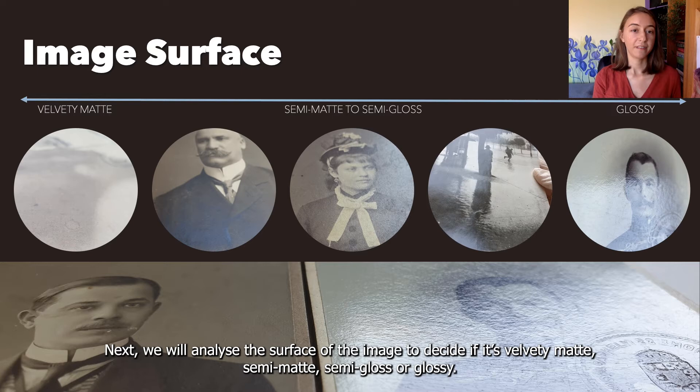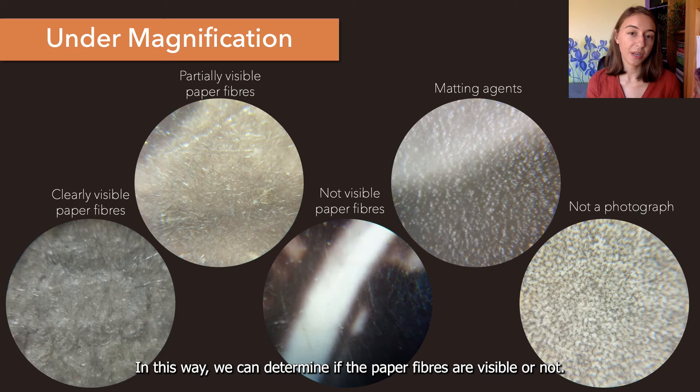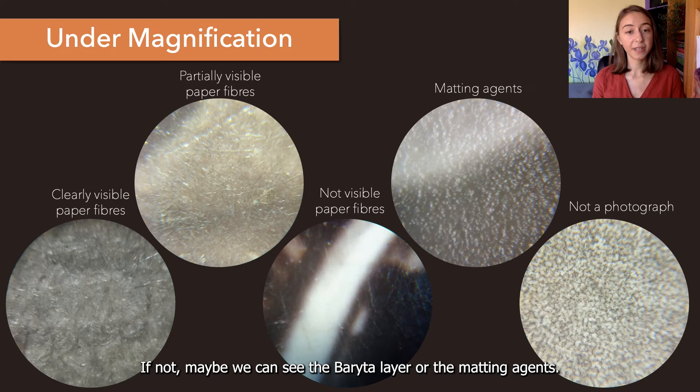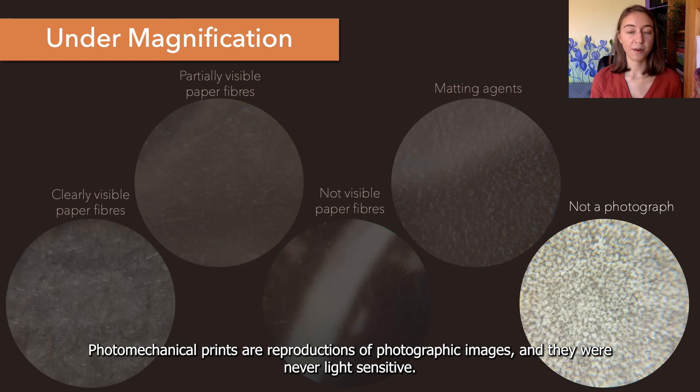Next, we will analyze the surface of the image to decide if it's velvety matte, semi-matte, semi-gloss, or glossy. Then we will look at the photograph through the microscope. In this way we can determine if the paper fibers are visible or not. If not, maybe we can see the baryta layer or the matting agents. Sometimes we can discover an interesting pattern showing that the print is not even a photograph but the result of a photomechanical process.